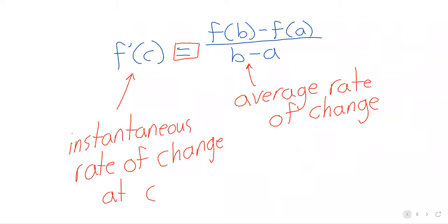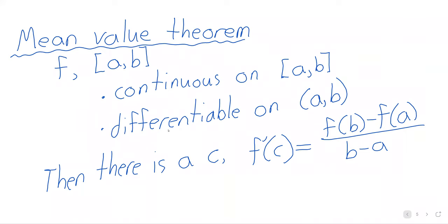In 99 cases out of a hundred, we don't have to worry about having two different conditions. In 99 cases out of a hundred, the function is going to be continuous everywhere and differentiable everywhere. You won't have to worry about whether it's differentiable at the end points — the overwhelming number of functions we look at are continuous everywhere and differentiable almost everywhere.